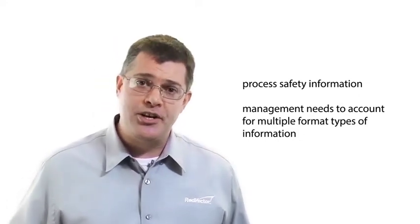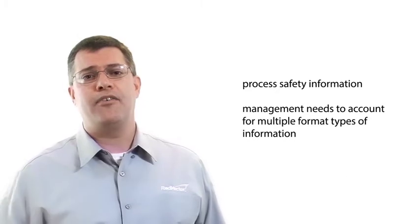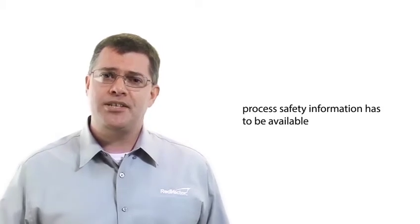The process safety information management structure needs to account for the multiple format types of the information, as process safety information can come in books, piping and instrument diagrams, electronic files, and paper documents. It has to be connected to the covered processes, and it has to be updated and added to when such information comes to light. And along with all this, process safety information also has to be available when needed.